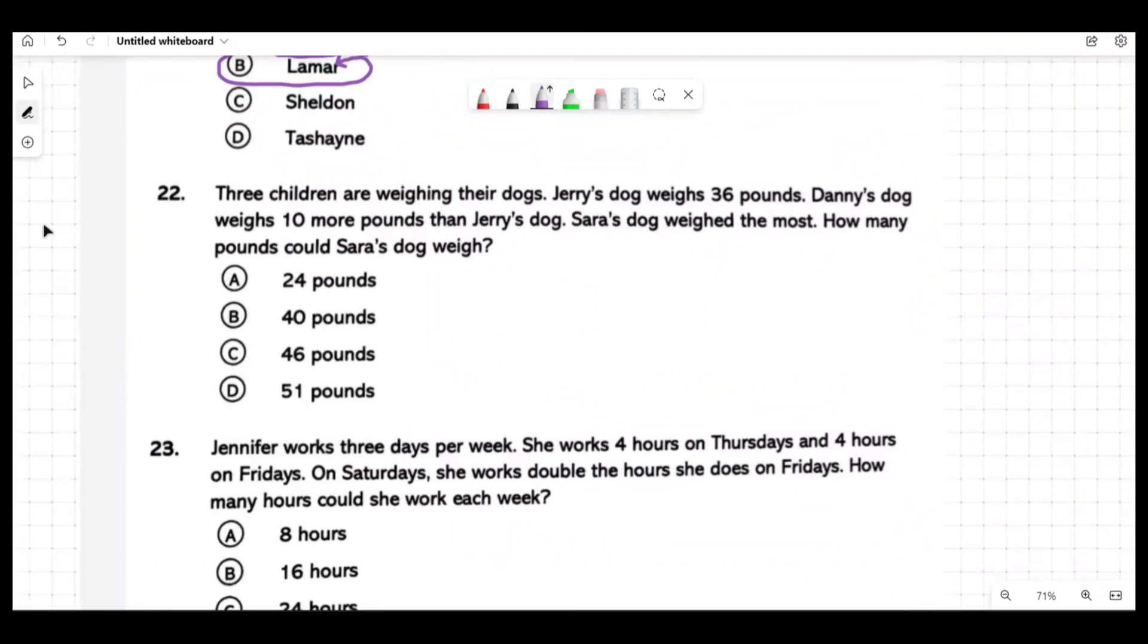Three children are weighing their dogs. Jerry's dog weighs 36 pounds. Danny's dog weighs 10 more pounds than Jerry's dog. Sarah's dog weighed the most. How many pounds could Sarah's dog weigh? We don't know what it is, but how many pounds could it be? Could it be 46? Remaine, why? Why could the answer be 46, Remaine?